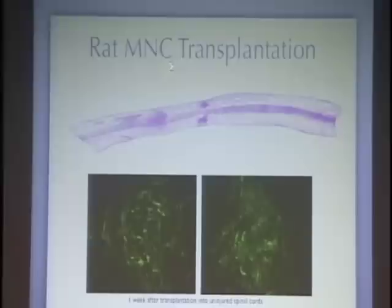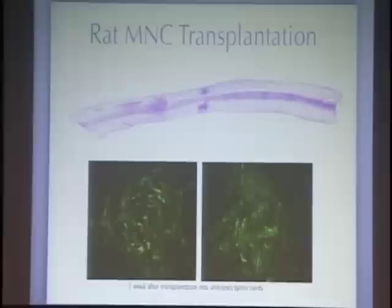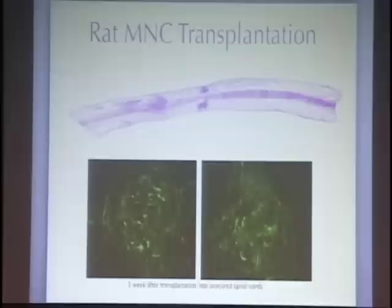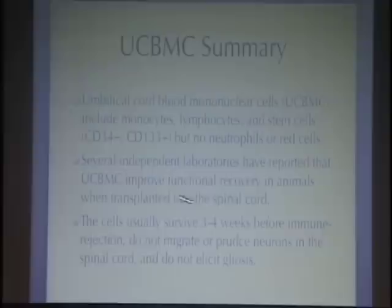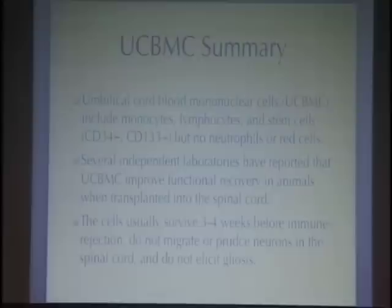We took mononuclear cells from young neonatal rats and transplanted them into the spinal cord. Two things pleased us: first, these cells don't migrate — at two weeks after transplantation into uninjured spinal cord, like good children, they stay where they're put. In summary, umbilical cord blood mononuclear cells — which include monocytes, lymphocytes, and stem cells including CD34 and CD133, but no neutrophils or red cells — are beneficial in spinal cord injury. They usually survive three to four weeks before immune rejection, do not migrate, do not produce neurons in the spinal cord, and do not elicit gliosis.